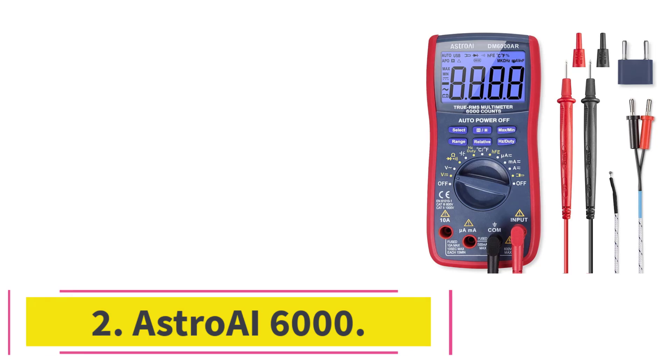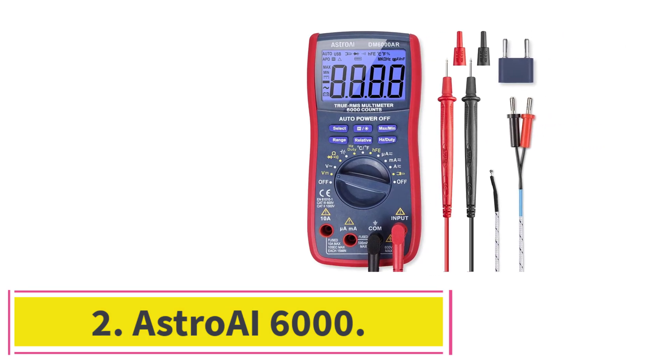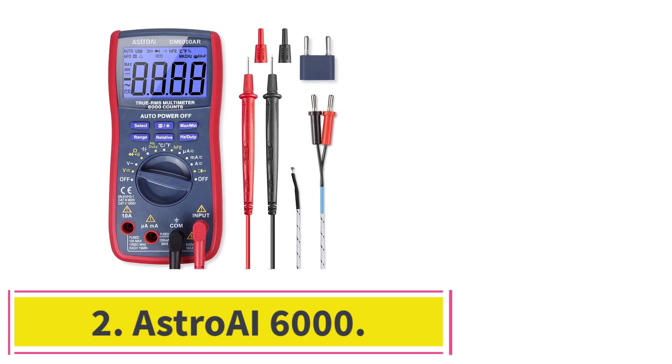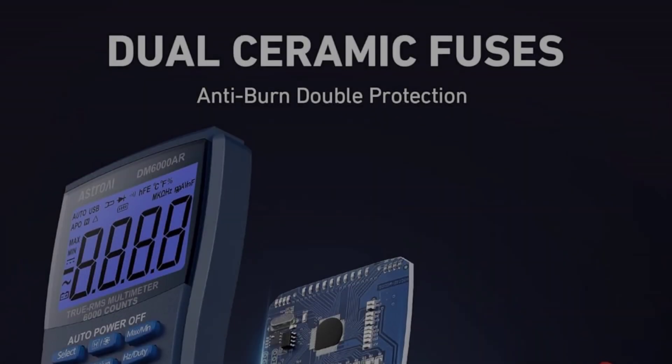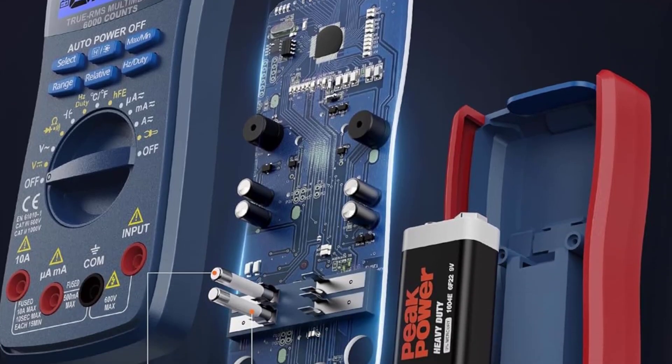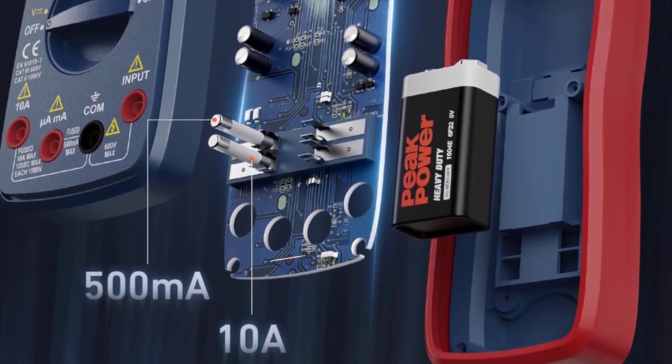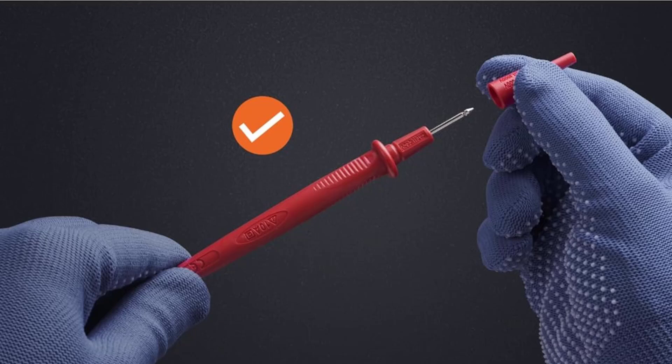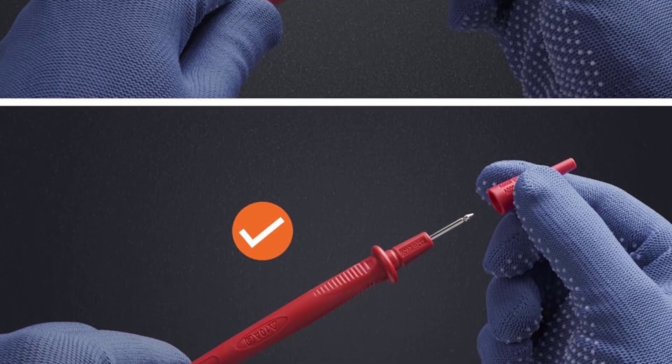At Number 2, Astro AI 6000. The Astro AI 6000 earns its spot as a favorite multimeter for electronic hobbyists. Compared to other premium products, this model combines an impressive set of AC and DC measurement capabilities in a convenient and affordable package.